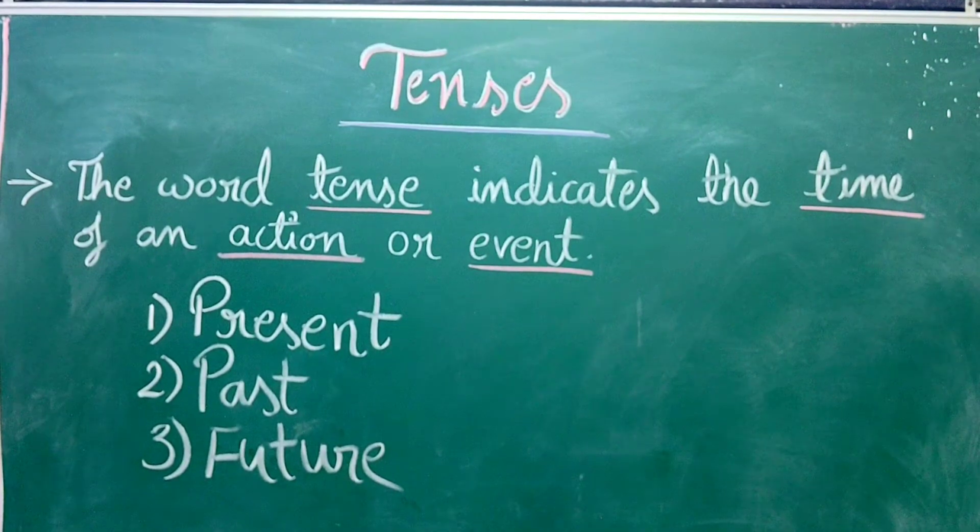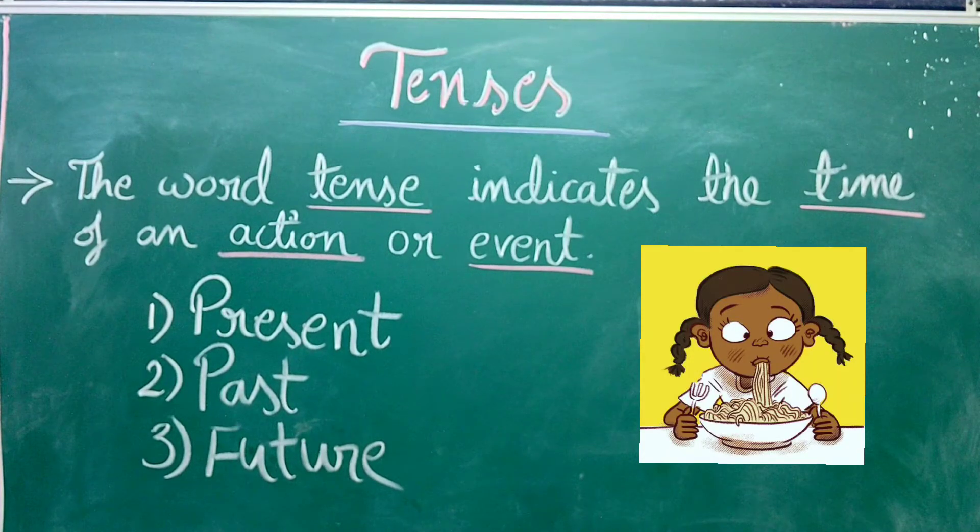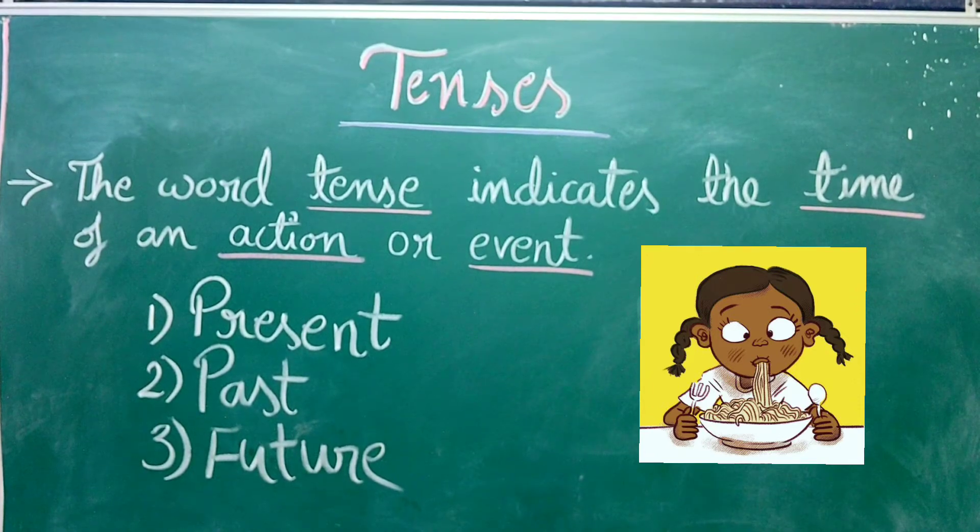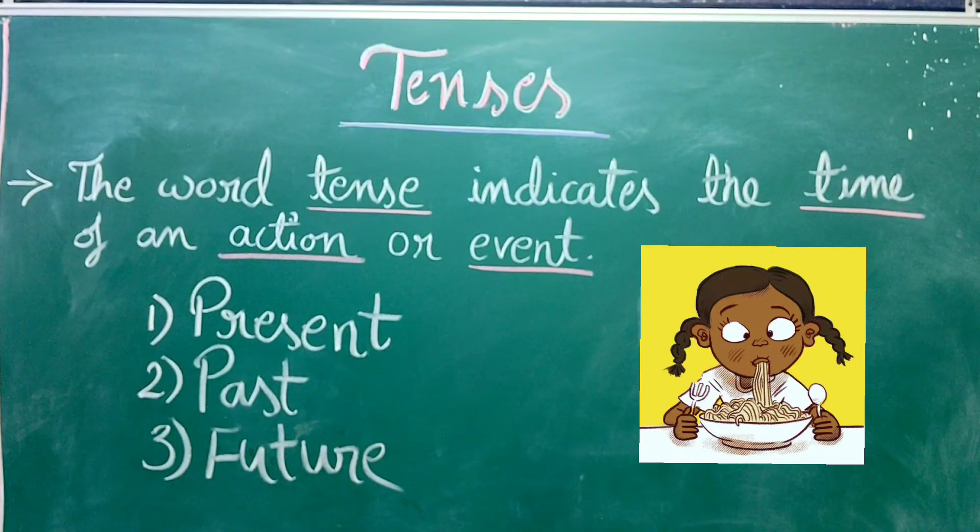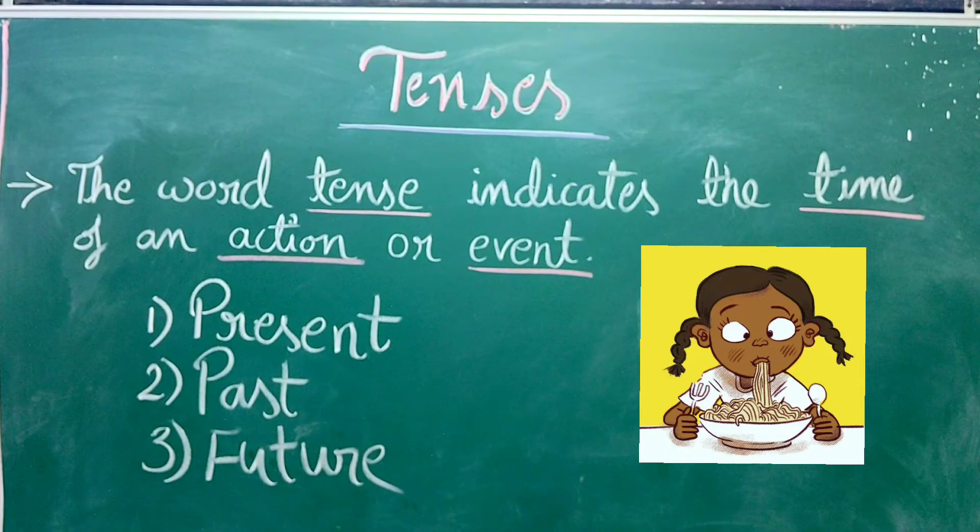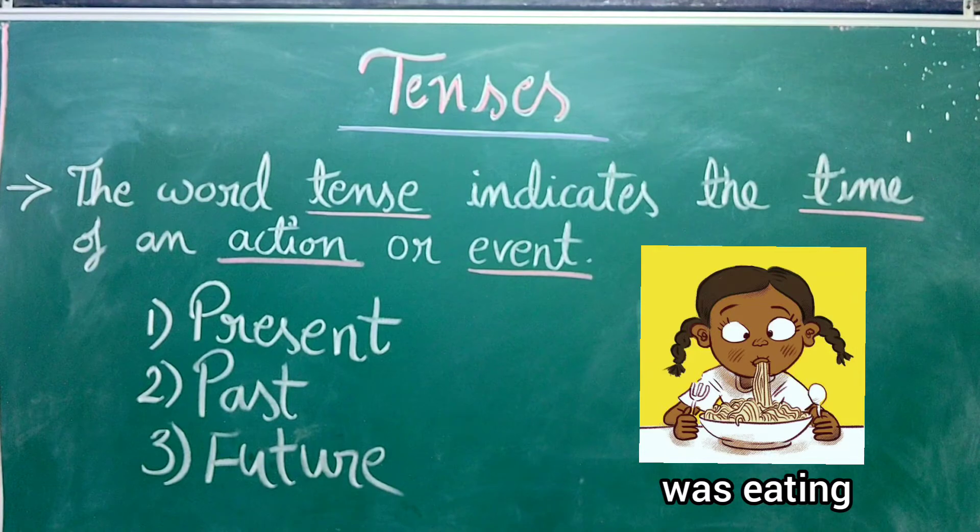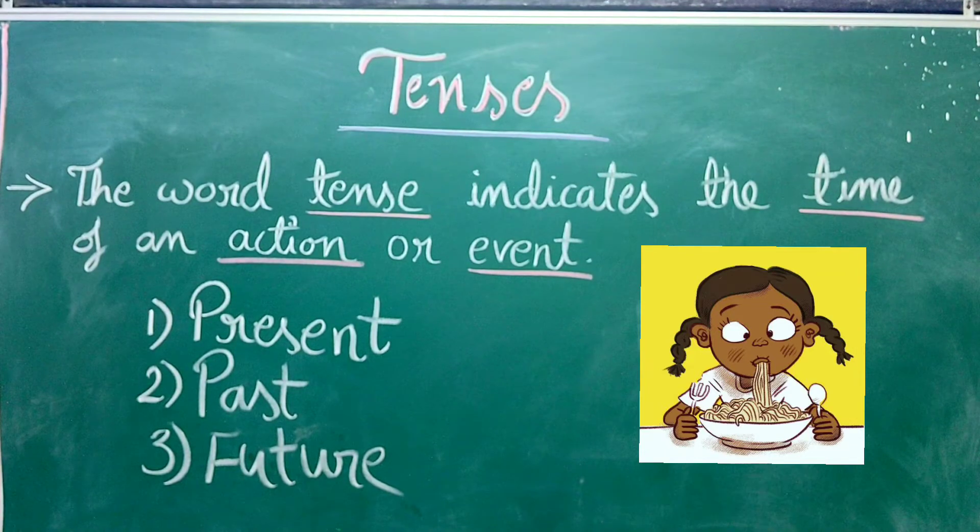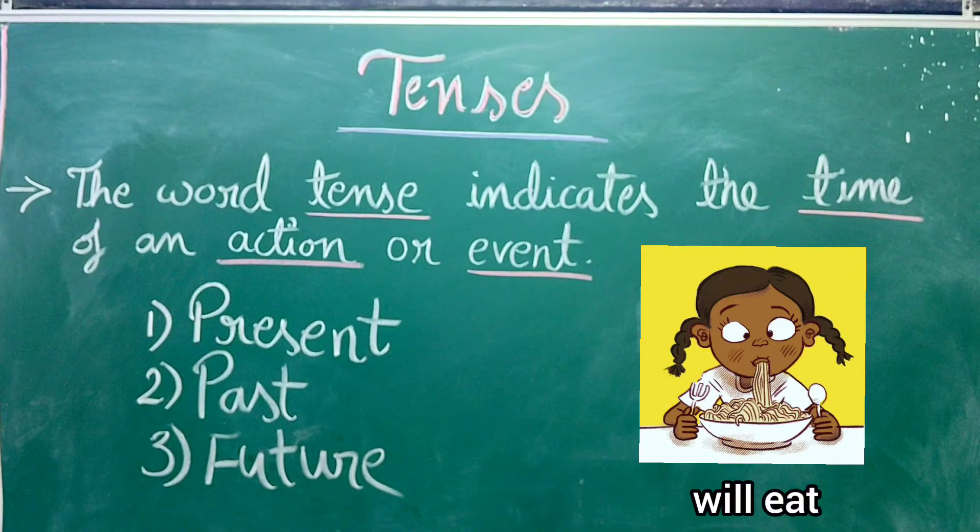So if I say, I am eating noodles. Now this sentence has present tense. I am eating. For past tense, now if I say I was eating noodles, so here was eating will be past tense. And if I say, I will eat noodles. So I will eat noodles has future tense.